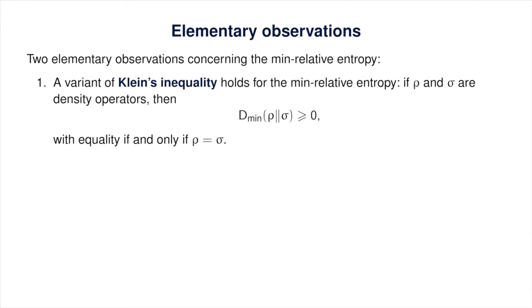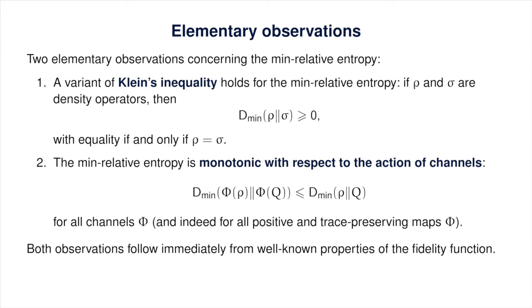We'll make two brief observations concerning the min-relative entropy. First, an analog of Klein's inequality holds for it, meaning that if rho and sigma are density operators, then the min-relative entropy of rho with respect to sigma must be non-negative, and zero if and only if rho equals sigma. Second, the min-relative entropy is monotonic with respect to the action of channels, which follows from the fact that the fidelity function is non-decreasing under the action of all channels, and indeed for all positive and trace-preserving maps.